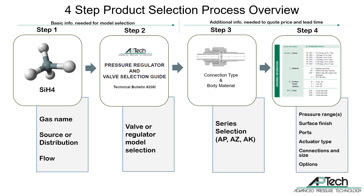In step two, with this information, you can use our pressure regulator and valve selection guide number 208 to select the model. Steps three and four require additional application information, but can be requested during step one to speed up the selection process.